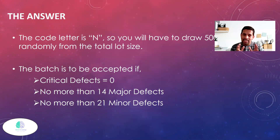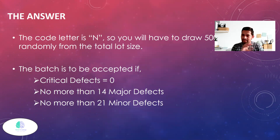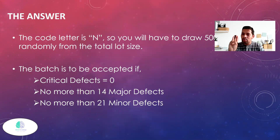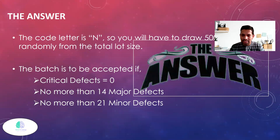That is the answer precisely. For a batch of 40,000, you're going to take 500 samples randomly — very importantly, randomly. The conditions are: critical defects should be zero, no more than 14 major defects, no more than 21 minor defects. Let's see the logic behind this.